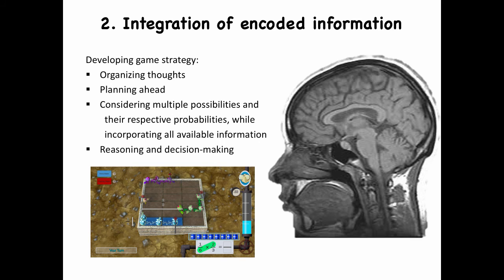This involves a number of executive or frontal lobe functions, including organizing thoughts, planning ahead, considering multiple possibilities and their respective probabilities, while incorporating all the available information, as well as reasoning and decision-making.